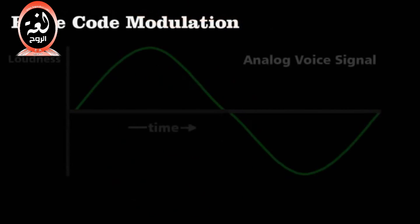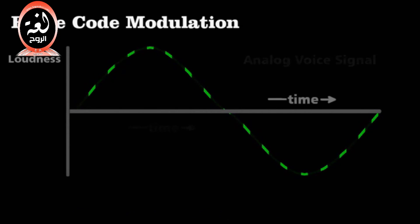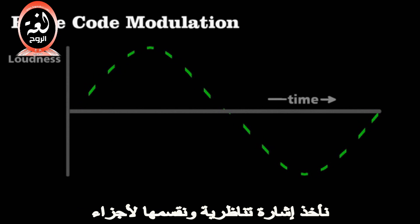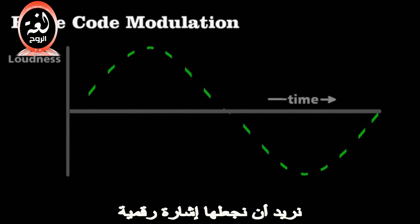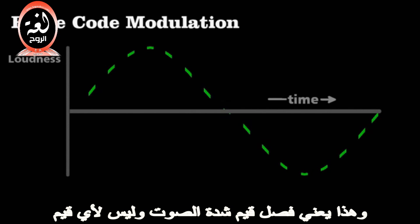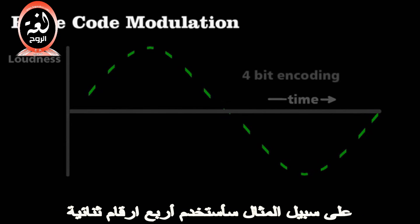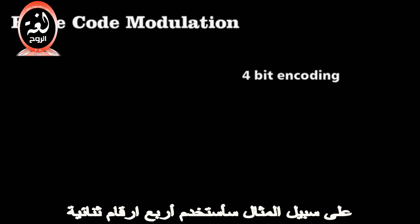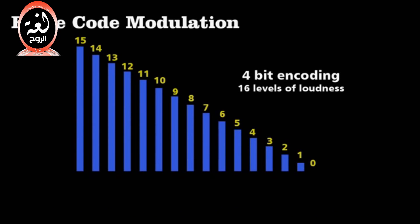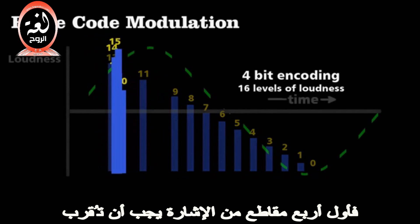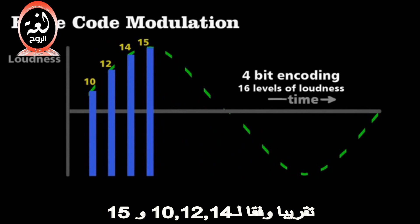To transmit an analog signal like voice from a phone call along the cable, engineers use pulse code modulation. We take an analog signal and cut it up into sections, then approximate the wave's loudness or amplitude as best we can. We want to make this a digital signal, which means discrete values of loudness and not just any value. For example, using 4 bits gives us 16 possible values for the loudness, so the first four sections of the signal could be approximated by about 10, 12, 14, and 15.